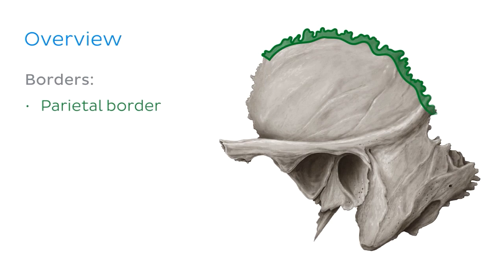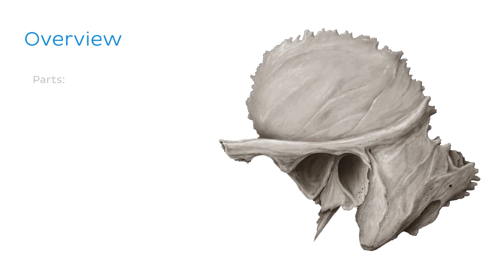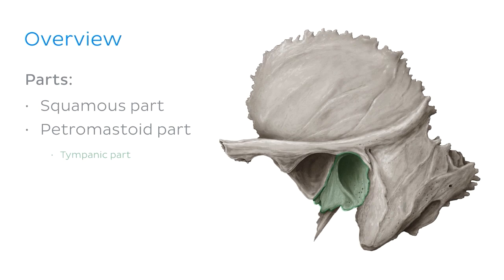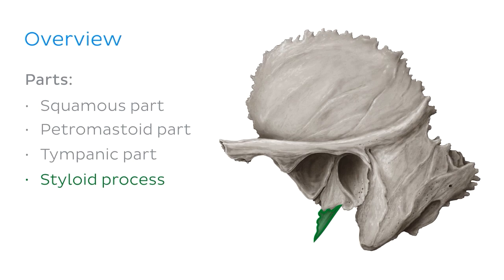Hey everyone, this is Nicole from KenHub and welcome to our tutorial on the temporal bone. In this tutorial we'll be covering the borders of the temporal bone, which are the parietal border, the occipital margin and the sphenoidal margin. We'll then have a look at parts of the temporal bone including the squamous part, the petromastoid part, the tympanic part and the styloid process. We'll then conclude our tutorial by looking at some clinical notes related to the temporal bone.